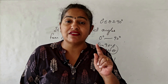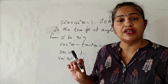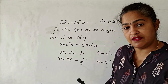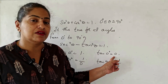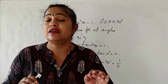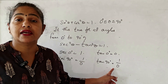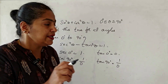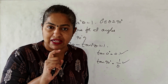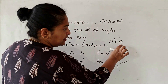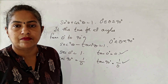Now let us check the validity of the second identity: sec²θ - tan²θ = 1. At 0°, sec 0° = 1 and tan 0° = sin 0°/cos 0° = 0/1 = 0 — no problem. But at 90°, sec 90° is undefined and tan 90° is also undefined. So this identity is valid for θ = 0° but not valid for θ = 90°.